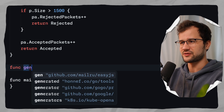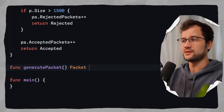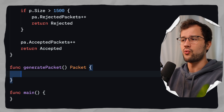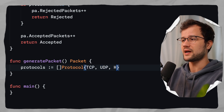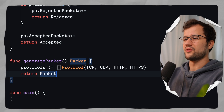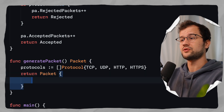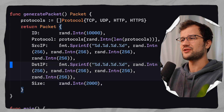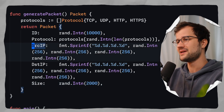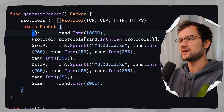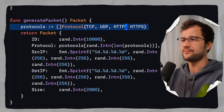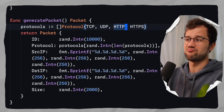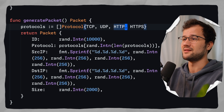Let's also have a utility function called generatePacket that returns a packet. Here we make use of random numbers. We create a slice of protocols containing TCP, UDP, HTTP, and HTTPS. Then we return a randomly generated packet with random source IP, ID, size, and protocol - using the length of the protocols slice to pick a random protocol.